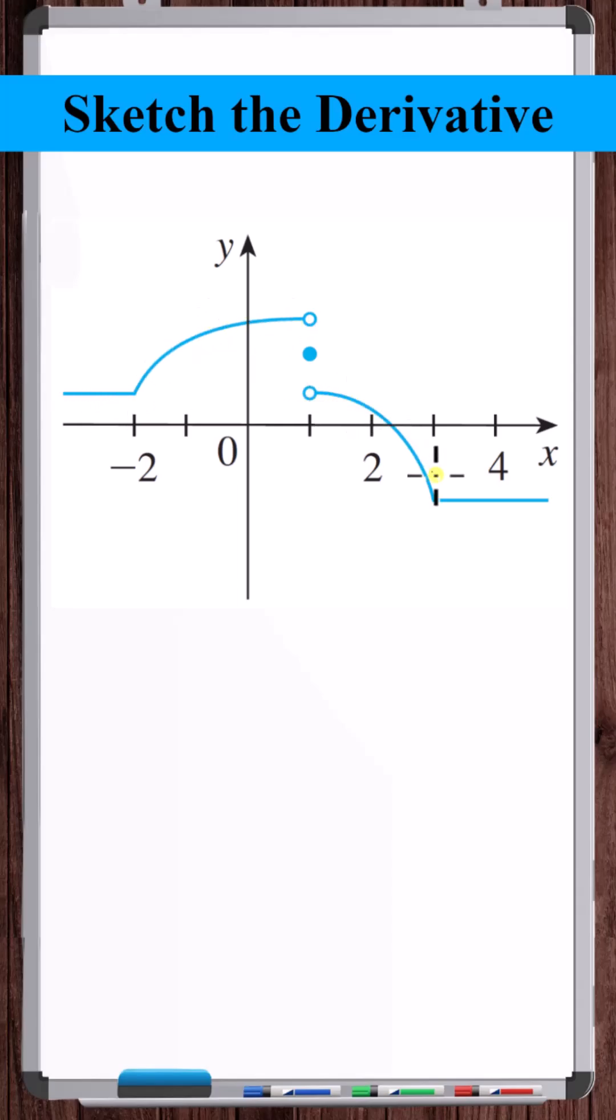Let's sketch the derivative of this function. Looking for key points, we see that there's a corner at x is equal to minus 2 and at x is equal to 3. There's also a jump discontinuity at x is equal to 1.